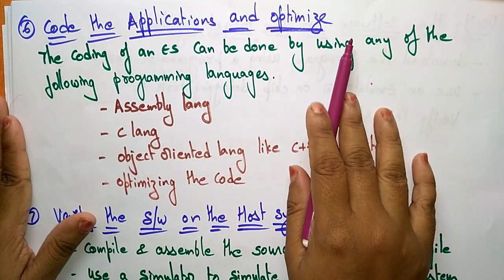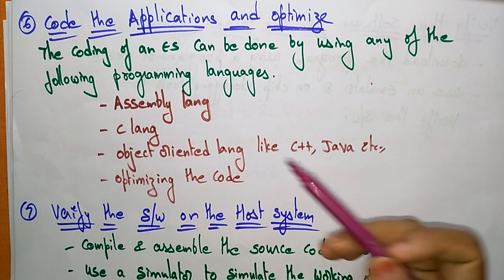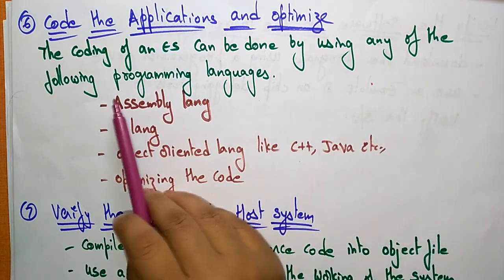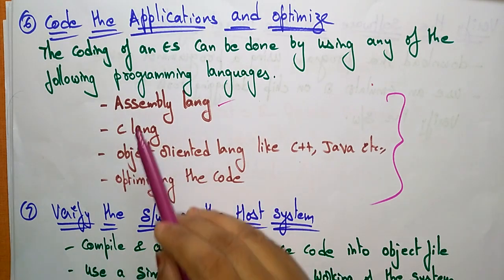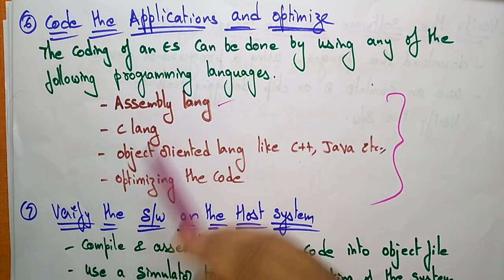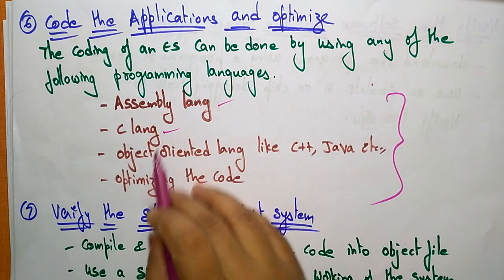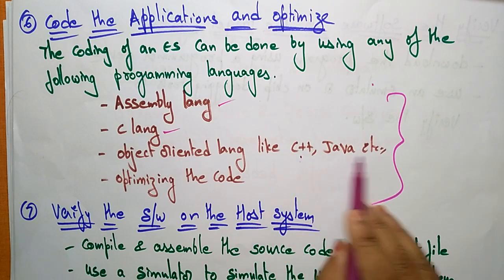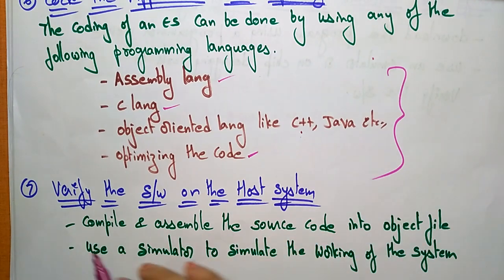The sixth step is coding the application and optimizing it. The coding of an embedded system can be done using any of the following programming languages: assembly language — which is preferred when using microcontrollers — C language, or object-oriented languages like C++ or Java. You also need to optimize the code as part of this step.